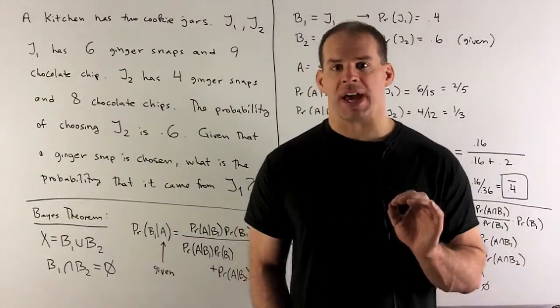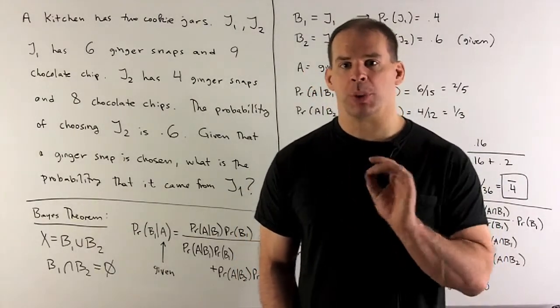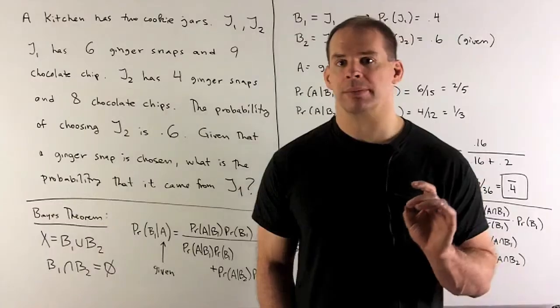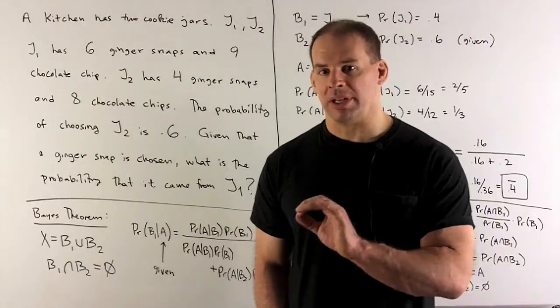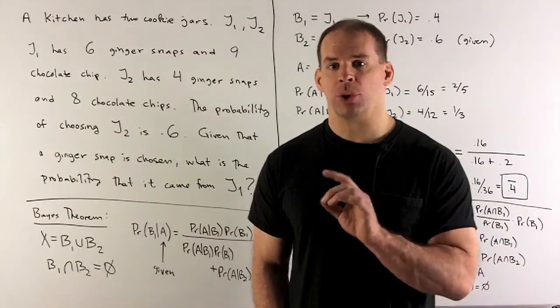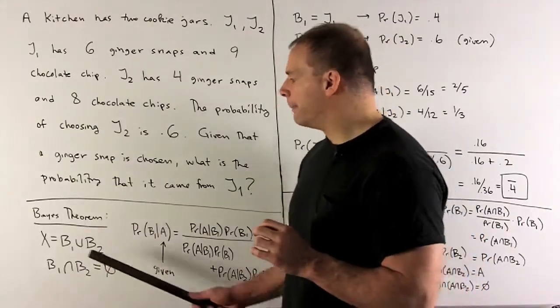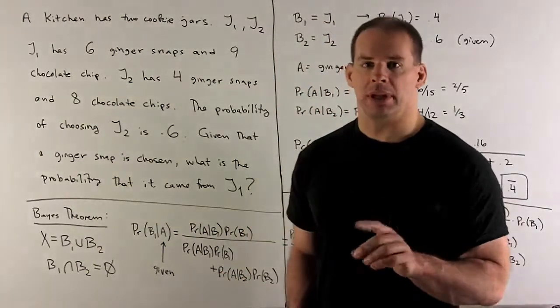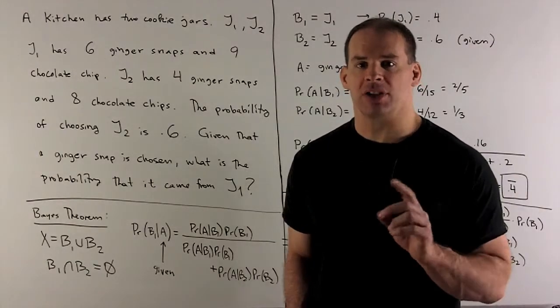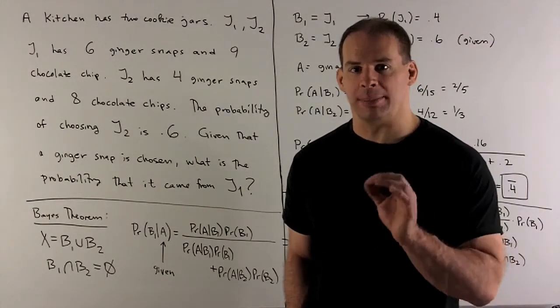Now, this is going to be an exercise in Bayes' theorem. So let's just put Bayes' theorem on the board first. We have our probability space X. We have two events, B1 and B2. We'll have that B1 union B2 is X. The intersection of B1 and B2 is the empty event.